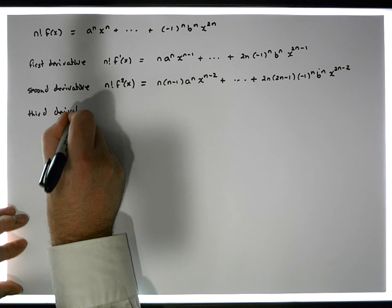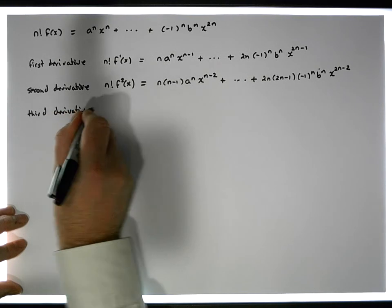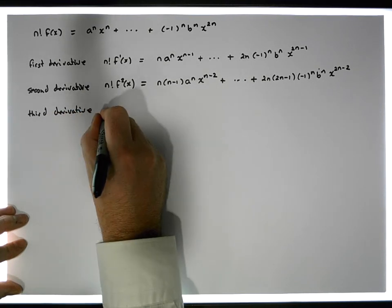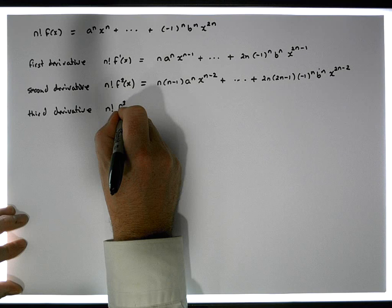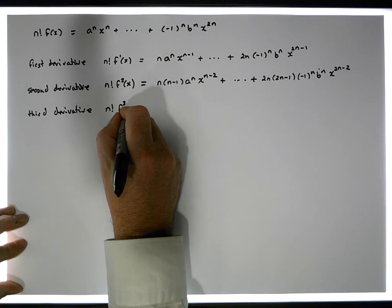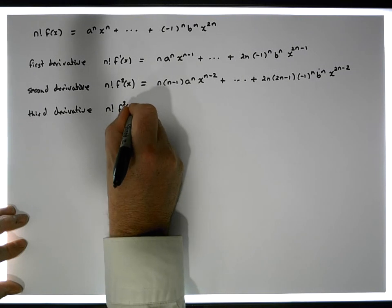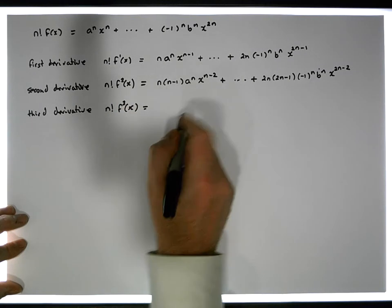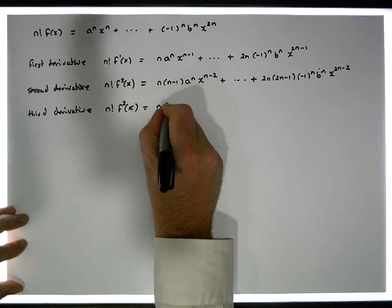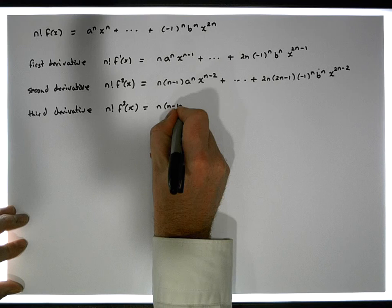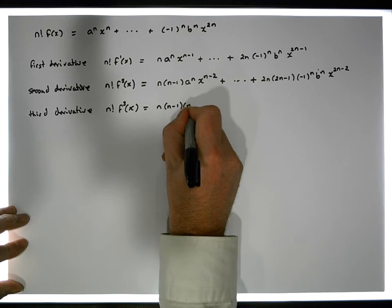The third derivative, n factorial times f₃(x), is going to be equal to n times (n minus one) times (n minus two) — and we continue differentiating each term in the same pattern.